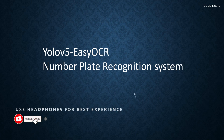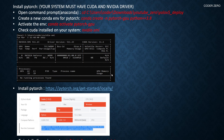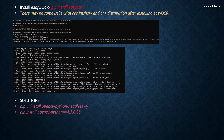Hey guys, welcome. Today I will be talking about how to create a number plate recognition system using YOLOv5 and EasyOCR. For this we need YOLOv5, and for YOLOv5 we need PyTorch. If you follow this session carefully you'll be able to install PyTorch on your local system. After installing PyTorch, let's install EasyOCR — just run 'pip install easyocr' on your command prompt and it will install EasyOCR.